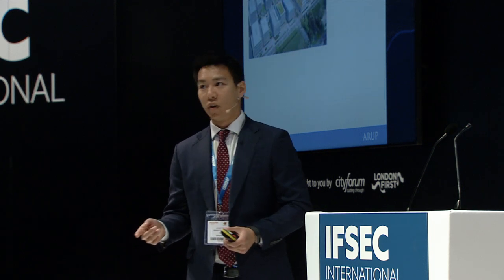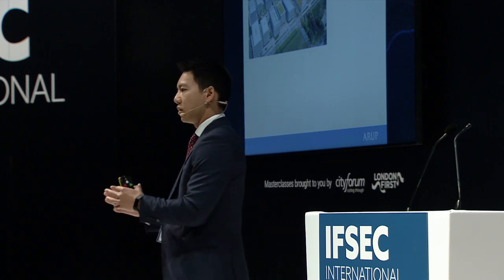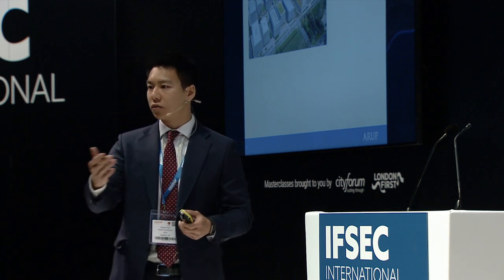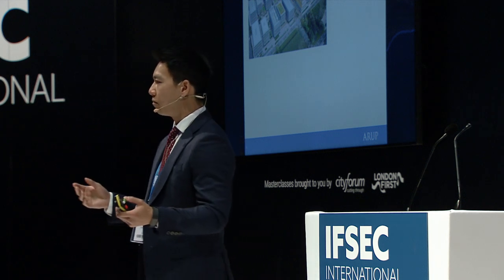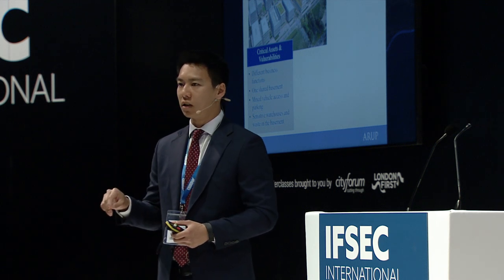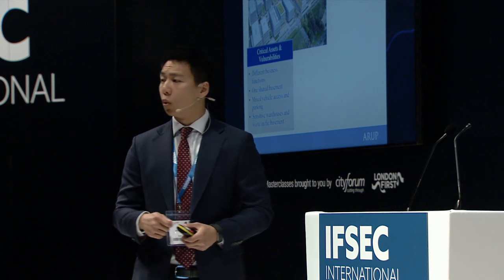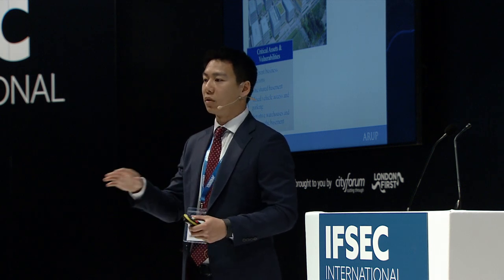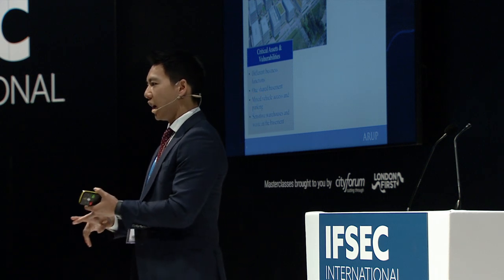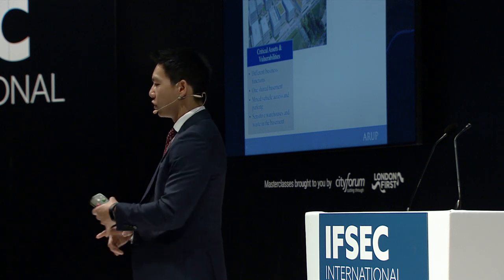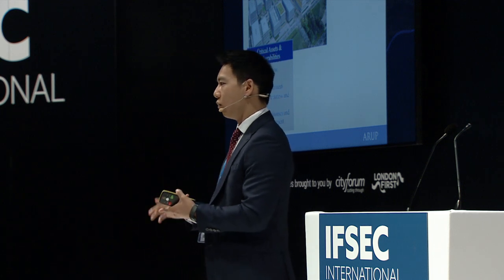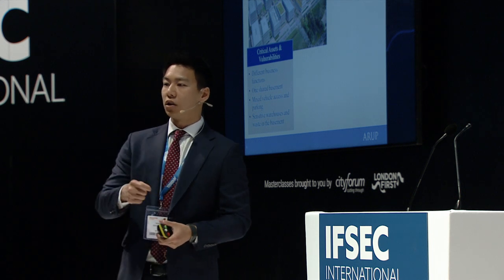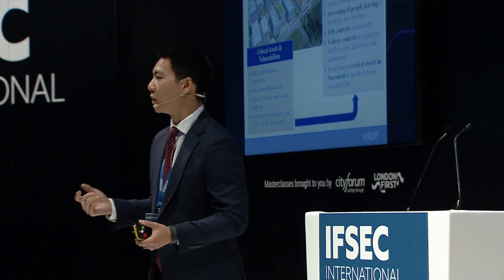Our second case study involved helping a technology firm consolidate all its businesses into one business park — something a lot of tech firms are doing, as you see in the San Francisco Bay Area. We helped them identify that as a vulnerability: they had many different business functions, one shared basement that would circumvent any security measures above, mixed vehicle access in that basement — shared parking for staff, visitors, contractors, and deliveries all together — and all the sensitive warehouses, waste rooms, and IT storage rooms in the basement containing the same IP as the research labs above.